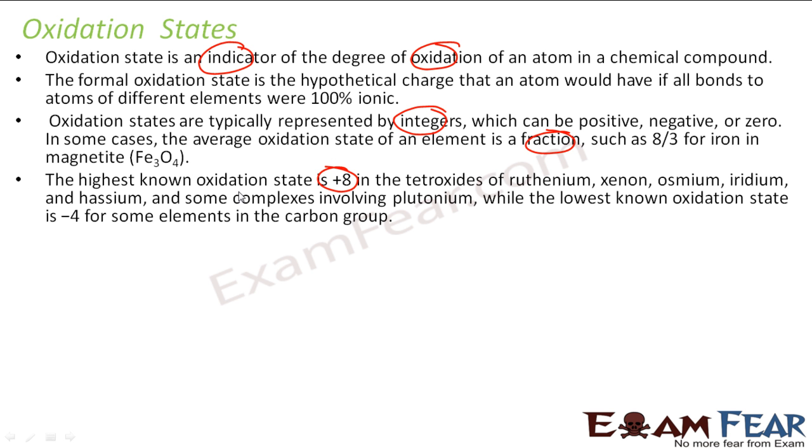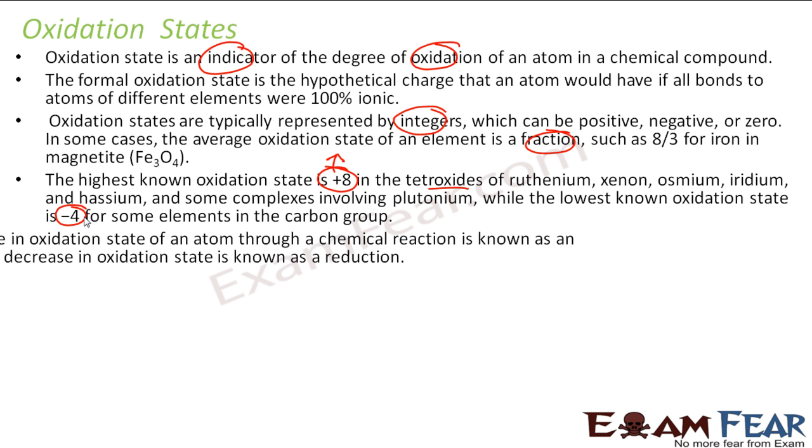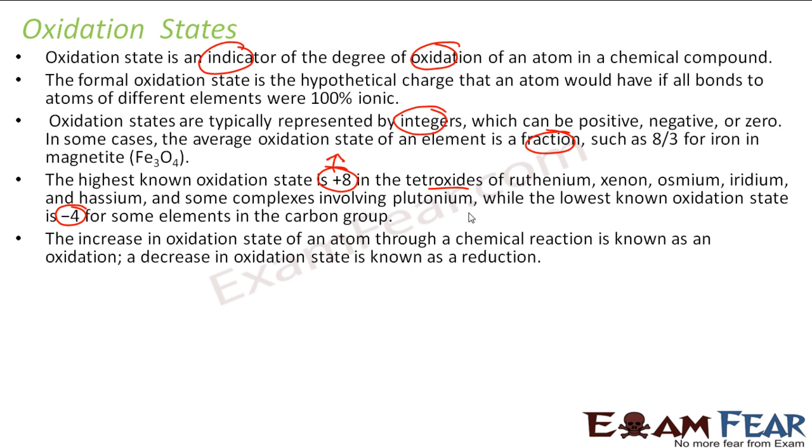The highest known oxidation state is plus 8 for tetroxides. And the lowest oxidation state is minus 4. For example, if you see CH4, carbon gets minus 4 and each hydrogen gets plus 1. So carbon oxidation state is minus 4 and hydrogen oxidation state is plus 1 times 4, which is plus 4. Overall it is 0. That's why it is a hypothetical charge where we assume that all the bonds are ionic. In this case it is not an ionic bond, it is a covalent bond, but we assume it is all ionic and it is a hypothetical charge which an atom can have in a molecule.